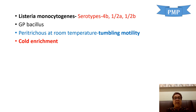It has tumbling motility, also called end-on-end motility. We can use cold enrichment to isolate Listeria from a group of bacteria because Listeria can grow across a wide temperature range from 4 to 45 degrees Celsius. Since refrigerators are around 4 degrees, we can refrigerate the culture plate rather than incubating at 37 degrees. Listeria will still grow while other bacteria cannot — this process is called cold enrichment. Also remember, cold enrichment is used for Yersinia as well.